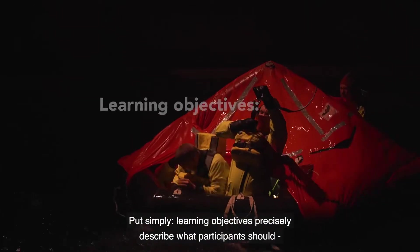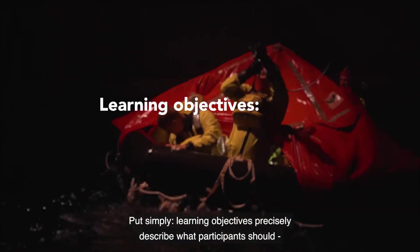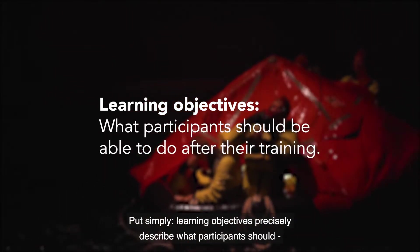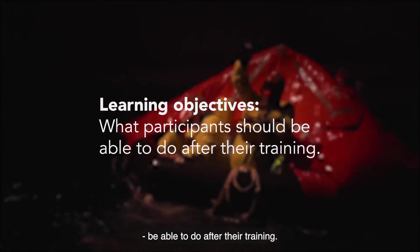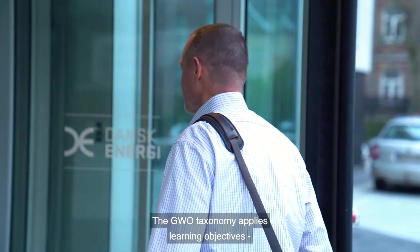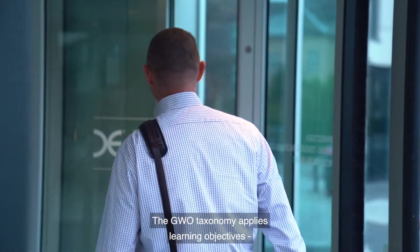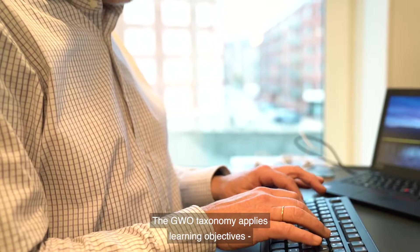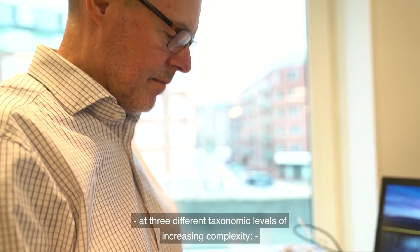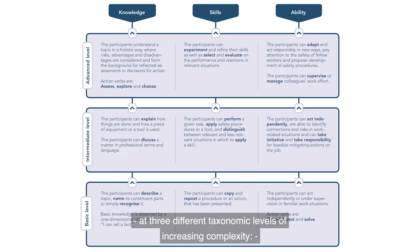Learning objectives are at the core of the GWO training standards. Put simply, learning objectives precisely describe what participants should be able to do after their training. The GWO taxonomy applies learning objectives at three different taxonomic levels of increasing complexity: the basic level, an intermediate level, and the advanced level.